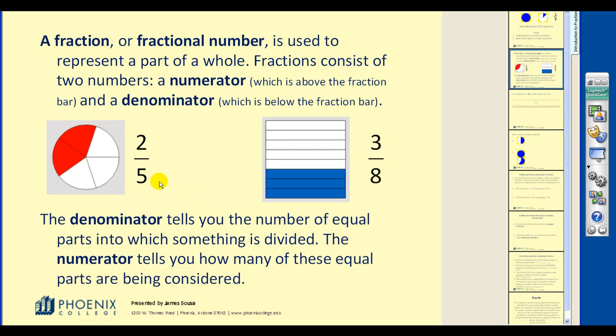So, for example, this fraction two fifths, notice how the circle is divided into five equal parts, with two of them being shaded. Over here we have three eighths, where we have divided into eight equal parts. Again, three of them shaded.